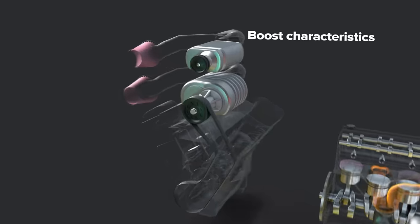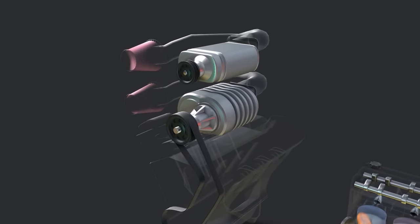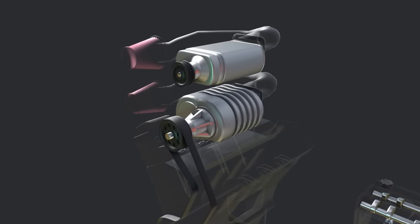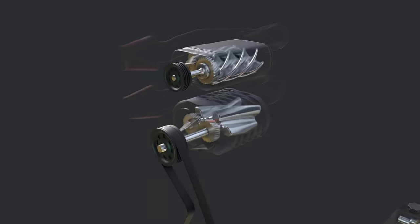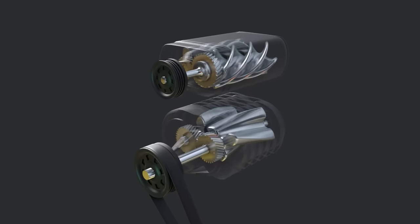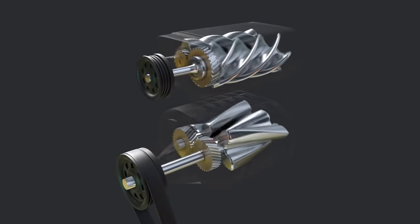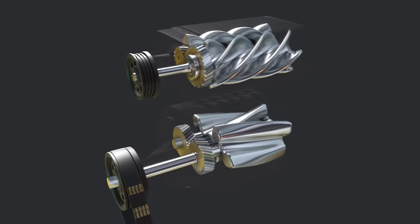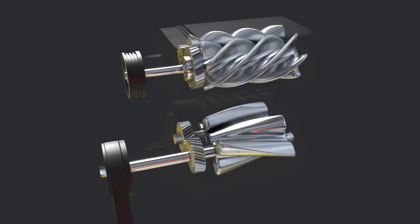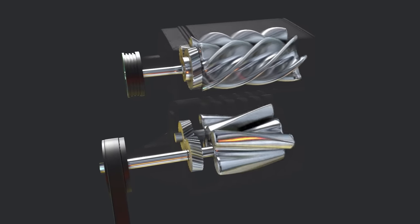Boost characteristics: Roots and twin screw superchargers have positive displacement, meaning that they move the same amount of air for each engine revolution, regardless of RPM. This also means that they can make boost immediately, even at very low RPMs, and have a fairly linear power curve.